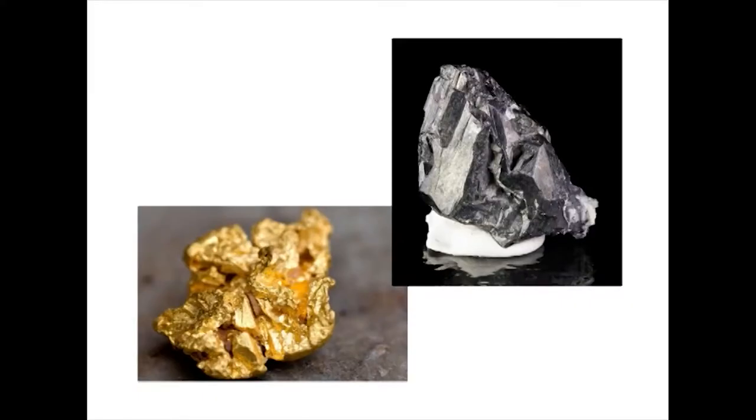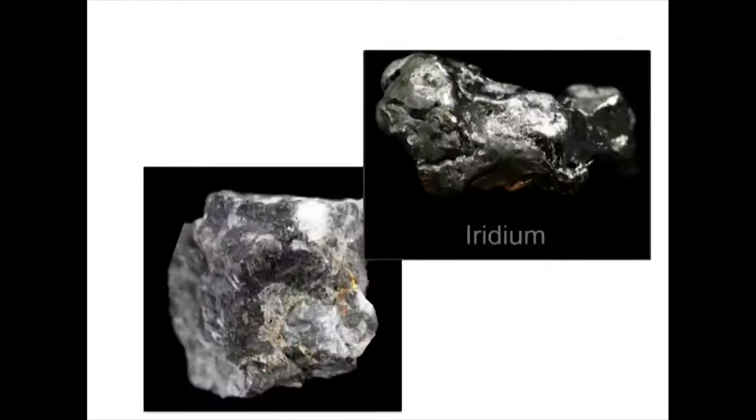In mineralogy there are several thousand listed minerals, but only about 60 of these have the necessary qualities of beauty, rarity and durability to make them suitable for use as gem materials. Within this select group of some 60 gem materials there are several metallic minerals. These include gold, silver, platinum and the platinum group metals rhodium and iridium.